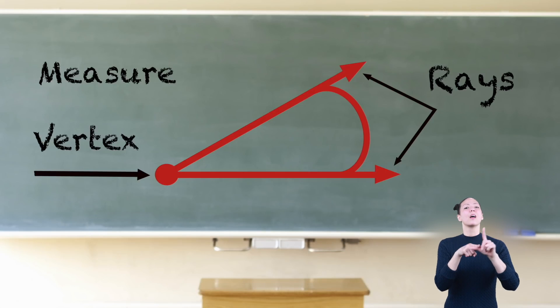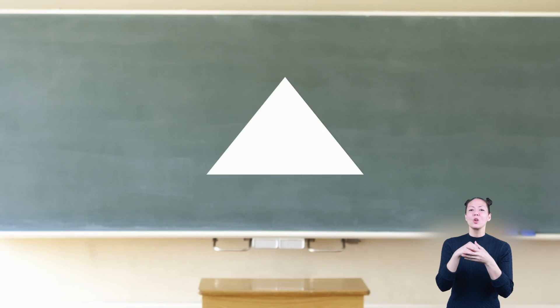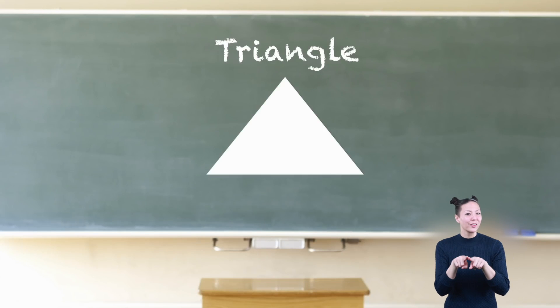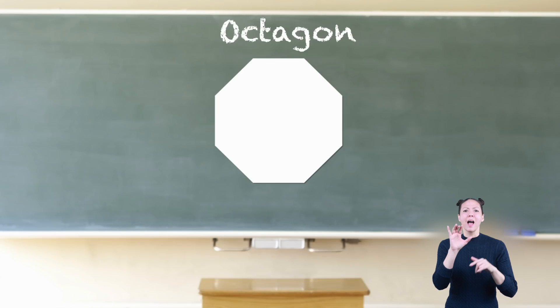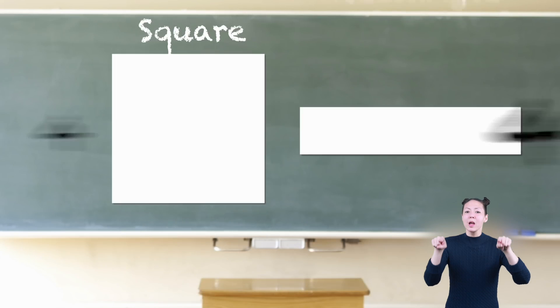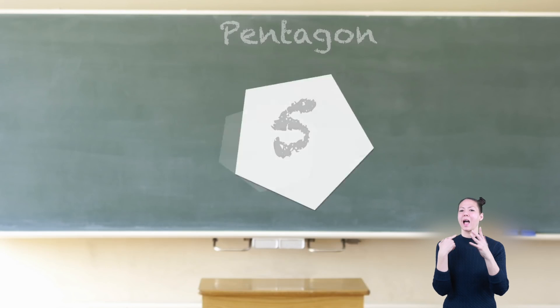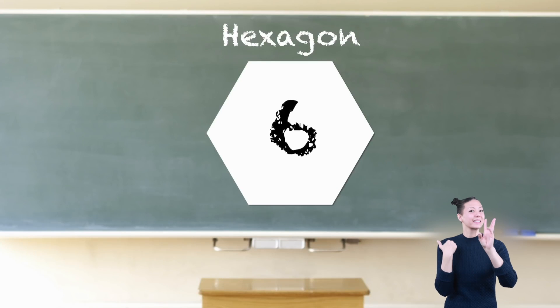Angles are found in geometric shapes. Some figures include three angles, like triangles. Some have many more, like octagons with eight angles. Squares and rectangles each have four angles. Pentagons have five angles, and hexagons have six angles.